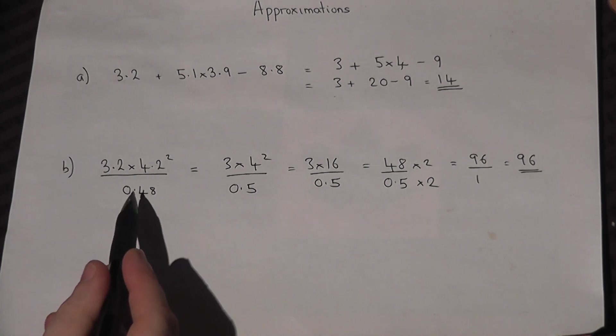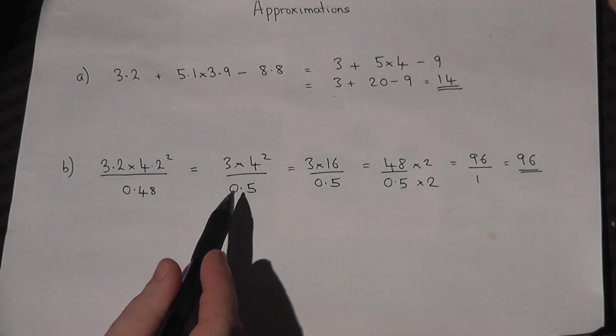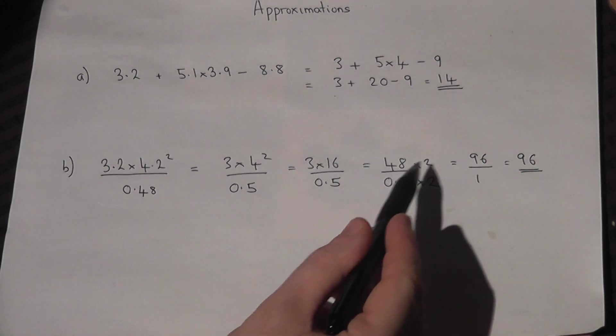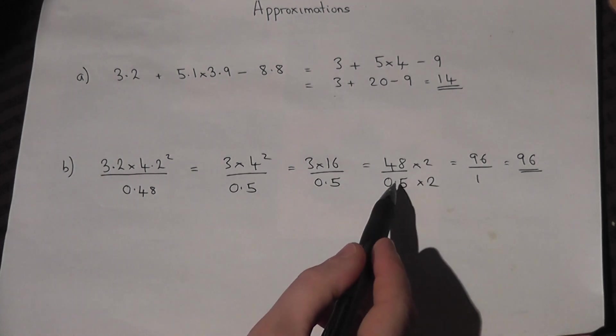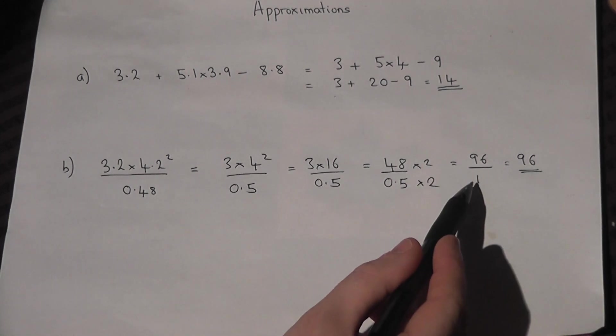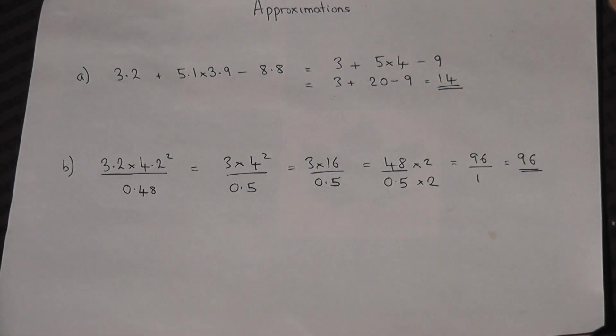So with decimals we look for the closest nice decimal. We then times the top and bottom by an integer to make the bottom a whole number. And then work out that final calculation which in this case is 96.